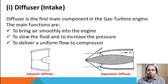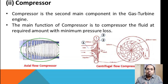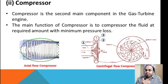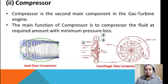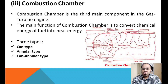The second component is the compressor. The main function of the compressor is to compress the fluid to a required amount of pressure with minimum total pressure loss. In aero engines we use two types of compressors: the centrifugal flow compressor and the axial flow compressor.